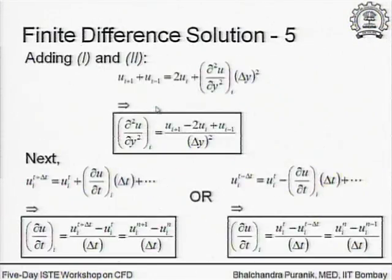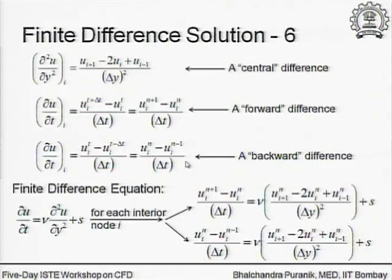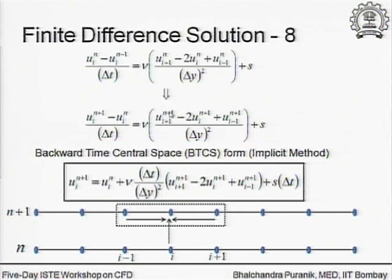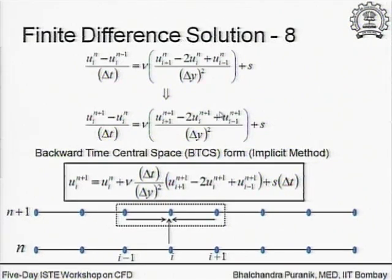On the other hand, we had another choice: the backward time difference - backward time and central space. This expression becomes u(i) at n plus 1 minus u(i) at n, and so on. Since time is in some way a dummy index, I rewrite this in the form u(i,n+1) minus u(i,n) equals all the spatial terms at the n plus first time level. If I try to rearrange this equation in the same form as the explicit scheme, I realize there is a slight problem.